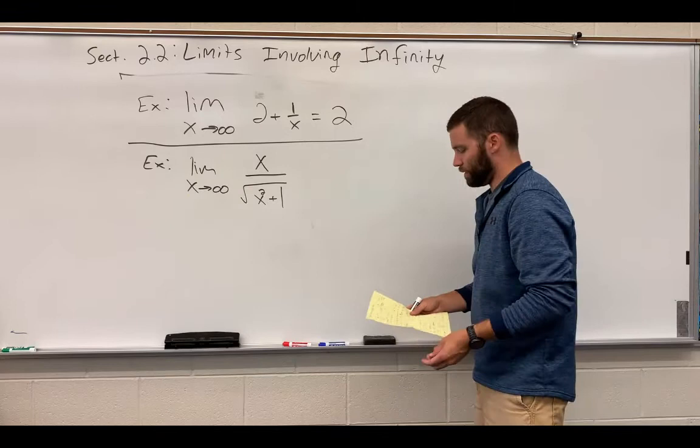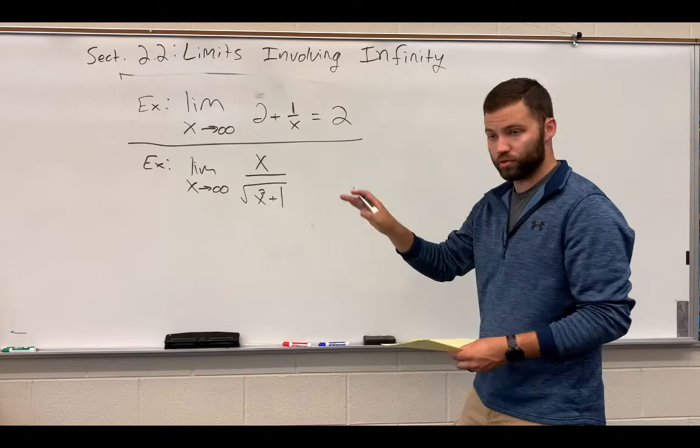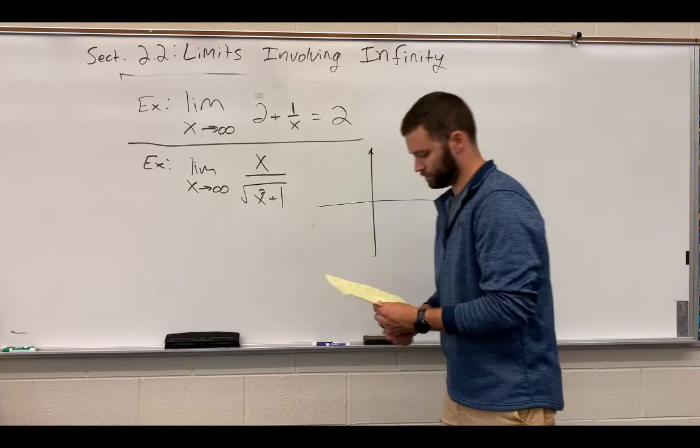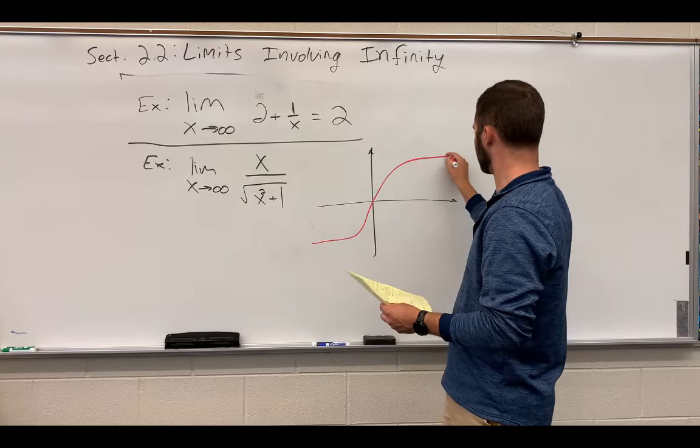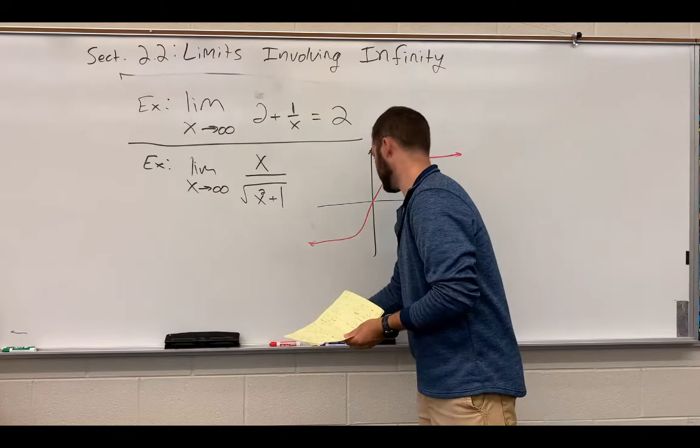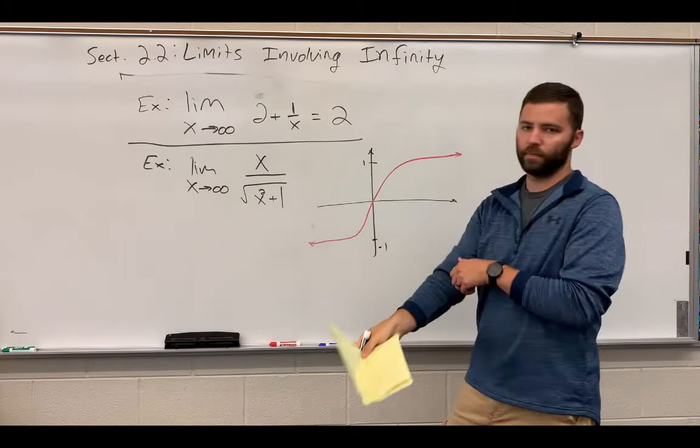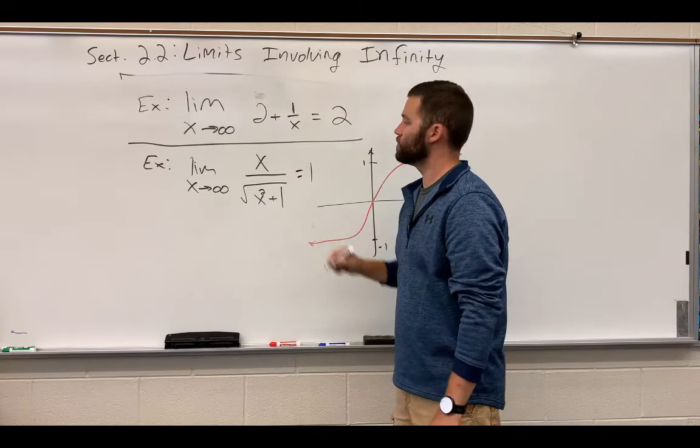So I'm going to put the graph up here. Hopefully you paused the video and you tried it. This is what the graph looks like. It looks something like this, where here we have negative 1 and here we have positive 1. So if you look at positive infinity, you end up with 1. So we'd say there is a horizontal asymptote at y equals 1.